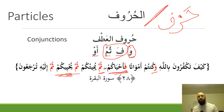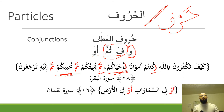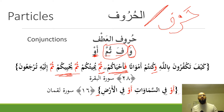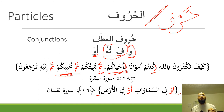Finally, another very common conjunction in the Quran is aw, which means 'or.' A sample ayah refers to Allah's ability to extract knowledge from anywhere — whether in the heavens or in the earth — using aw to present alternatives.